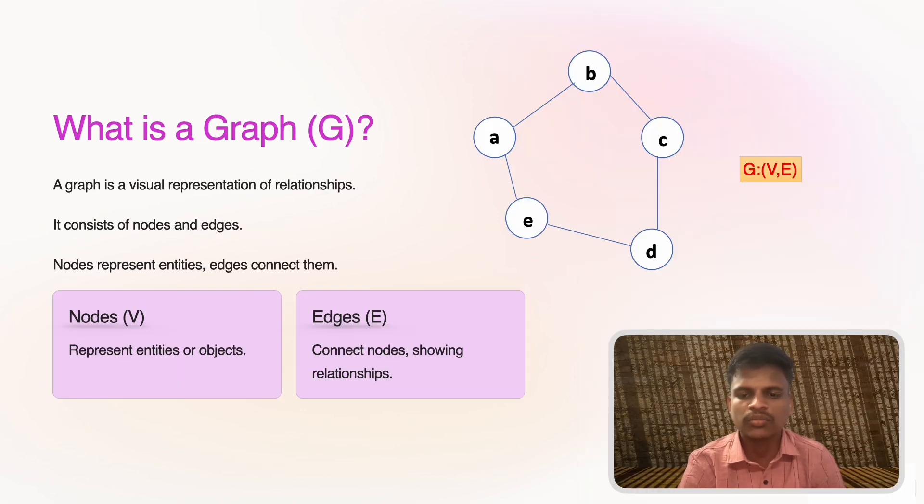A graph, denoted by G, consists of two primary components: nodes and edges. Nodes, often represented by the symbol V, stand for entities or objects. Edges, denoted as E, represent the relationships or connections between these nodes. Let's think of an example: imagine a social network. Each person is a node and each friendship is an edge connecting two nodes. This structure gives us a visual map of connections.